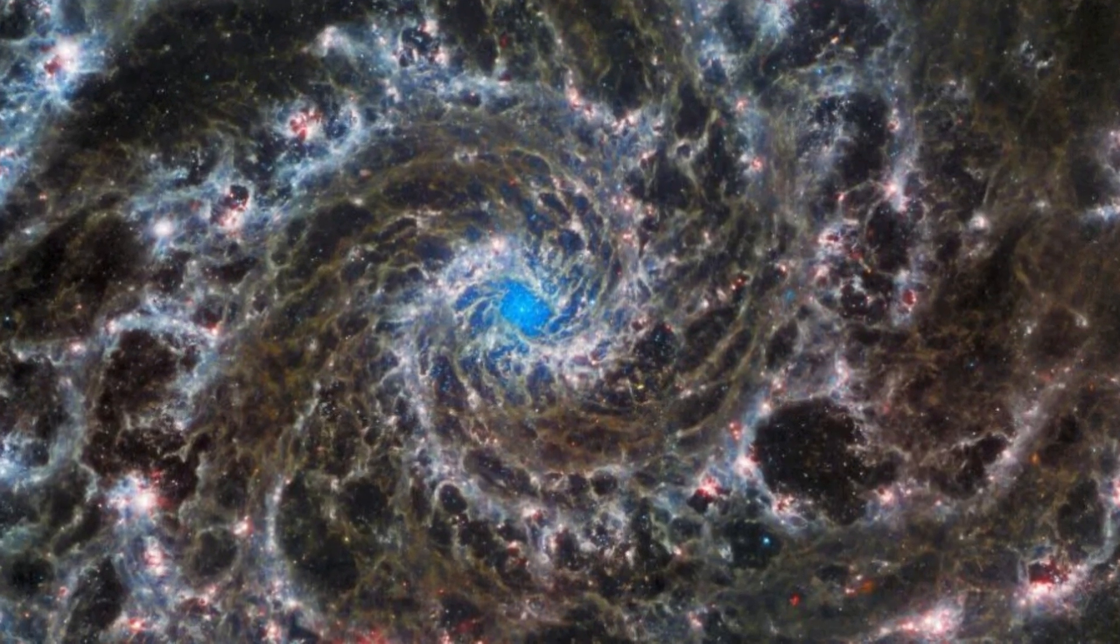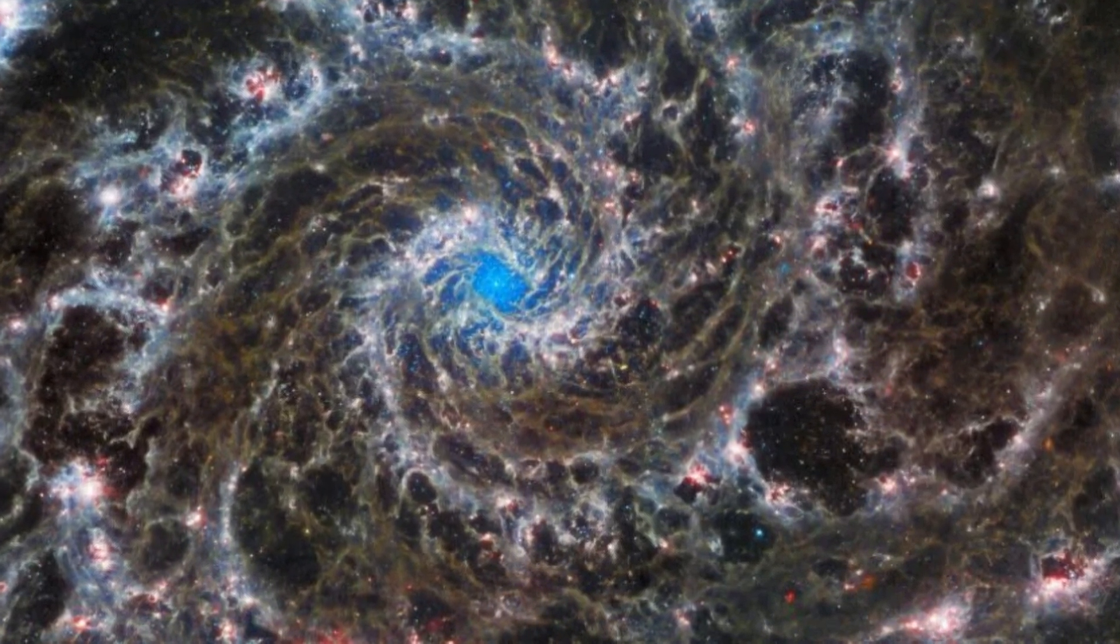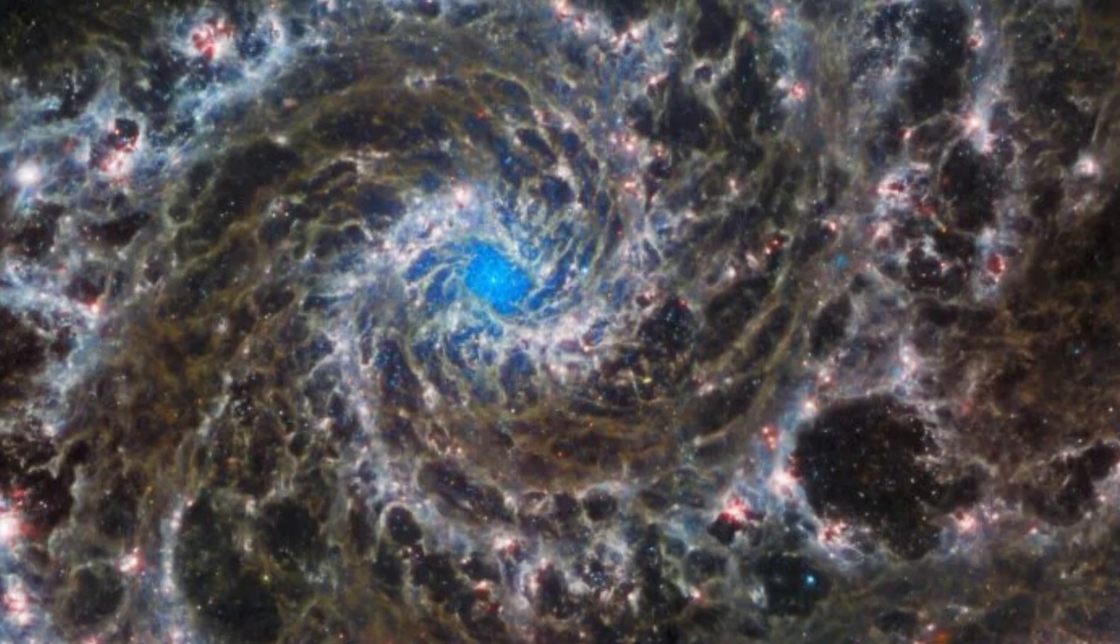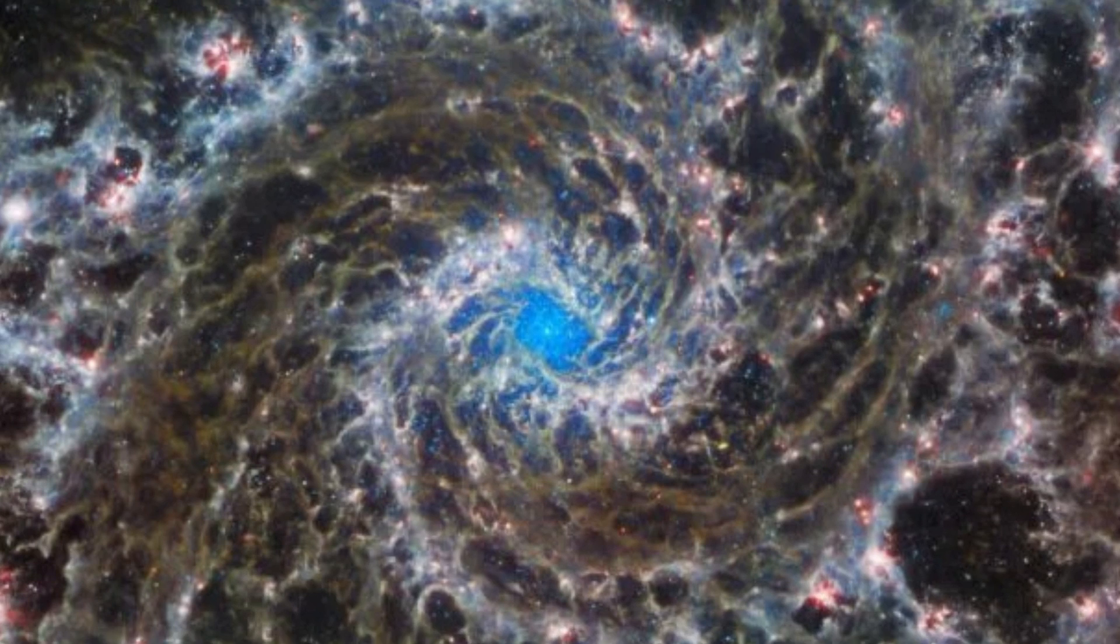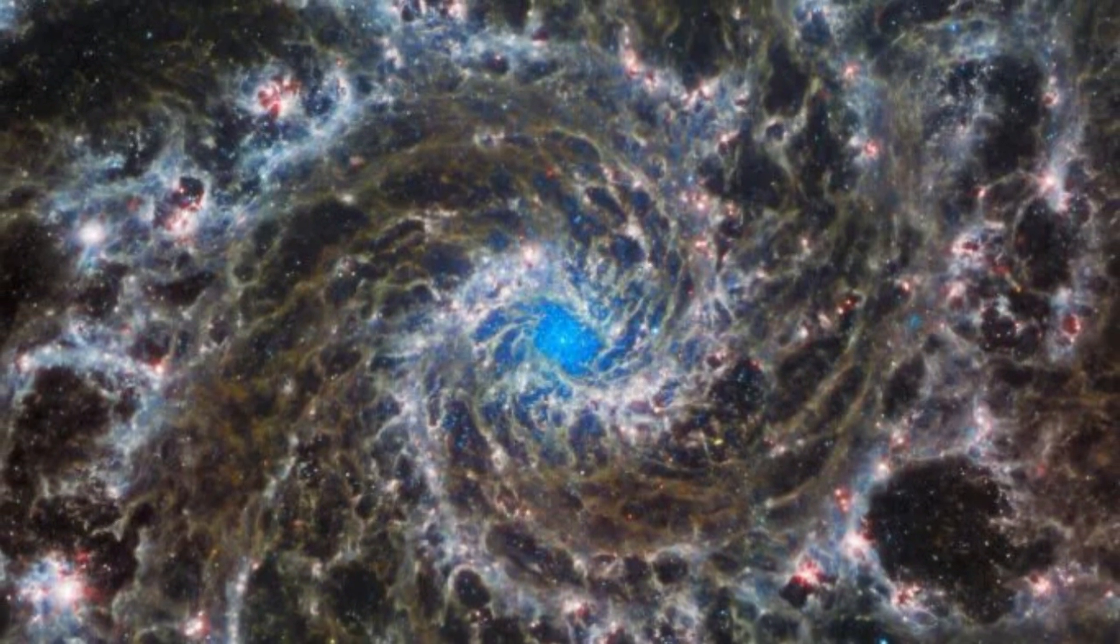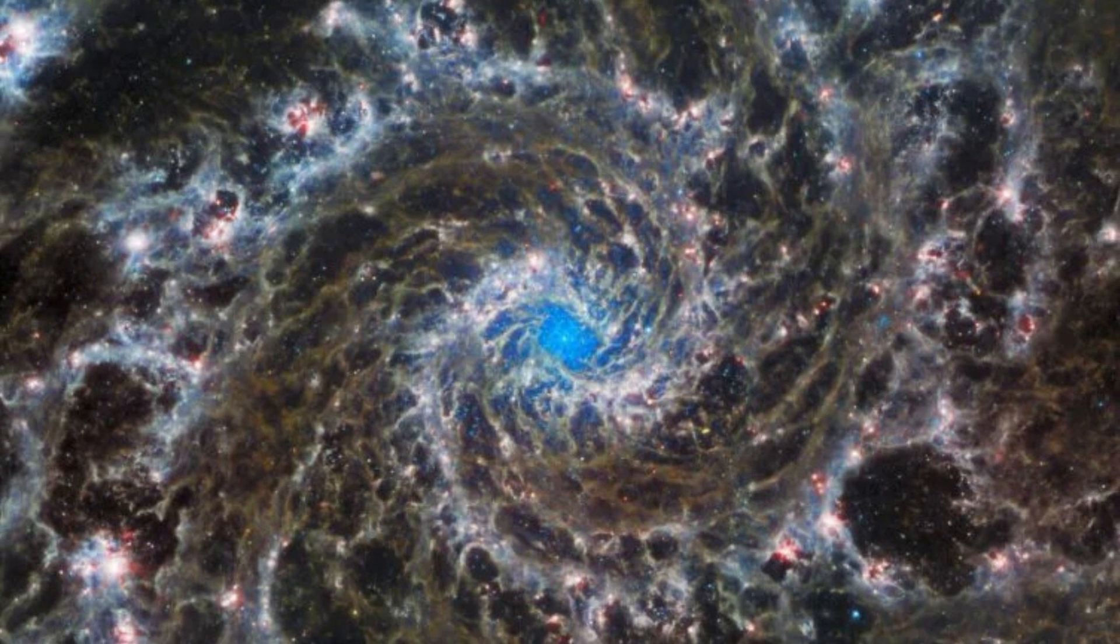However, a recent Webb image shows structures that resemble fibers made of heat-emitting dust and gas, that emanate from a bright center rendered in vivid electric blue. The new image will illuminate the star-forming regions dispersed along the galaxy's spiral arms in infrared light.